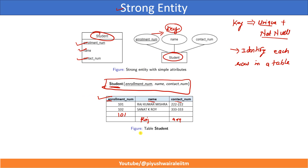Please remember, questions can be asked from this particular topic. We are going to discuss key in detail in further lectures. But as of now, just understand it should be unique and it should be not null, and it is used to identify each row in a particular table. This is how we represent the ER diagram, and this is how we convert it into relational schema. Student is the table name, and enrollment number, name, and contact number are the attributes, meaning columns. These three attributes are simple attributes.